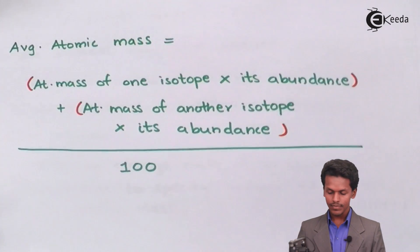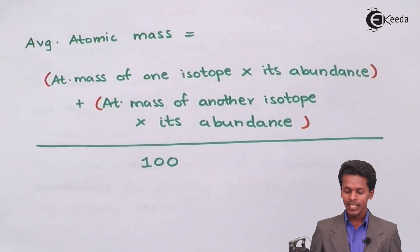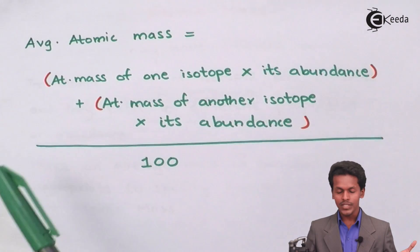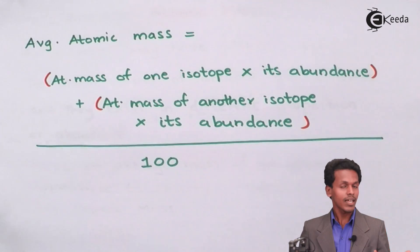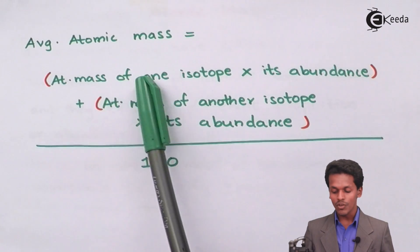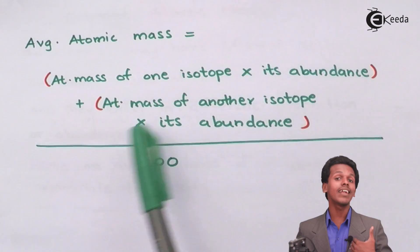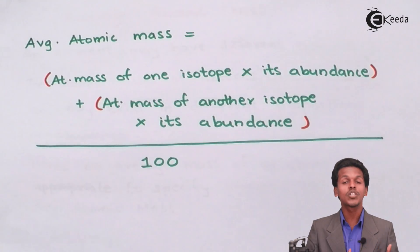As mentioned on your screen, the average atomic mass can be calculated as: suppose if I have an atomic mass of an isotope with a particular abundance, the atomic mass of one isotope should be multiplied by its abundance, meaning in which percentage it is present in nature. Plus, because I am taking average, I have to add all the kinds of isotopes that I could collect.